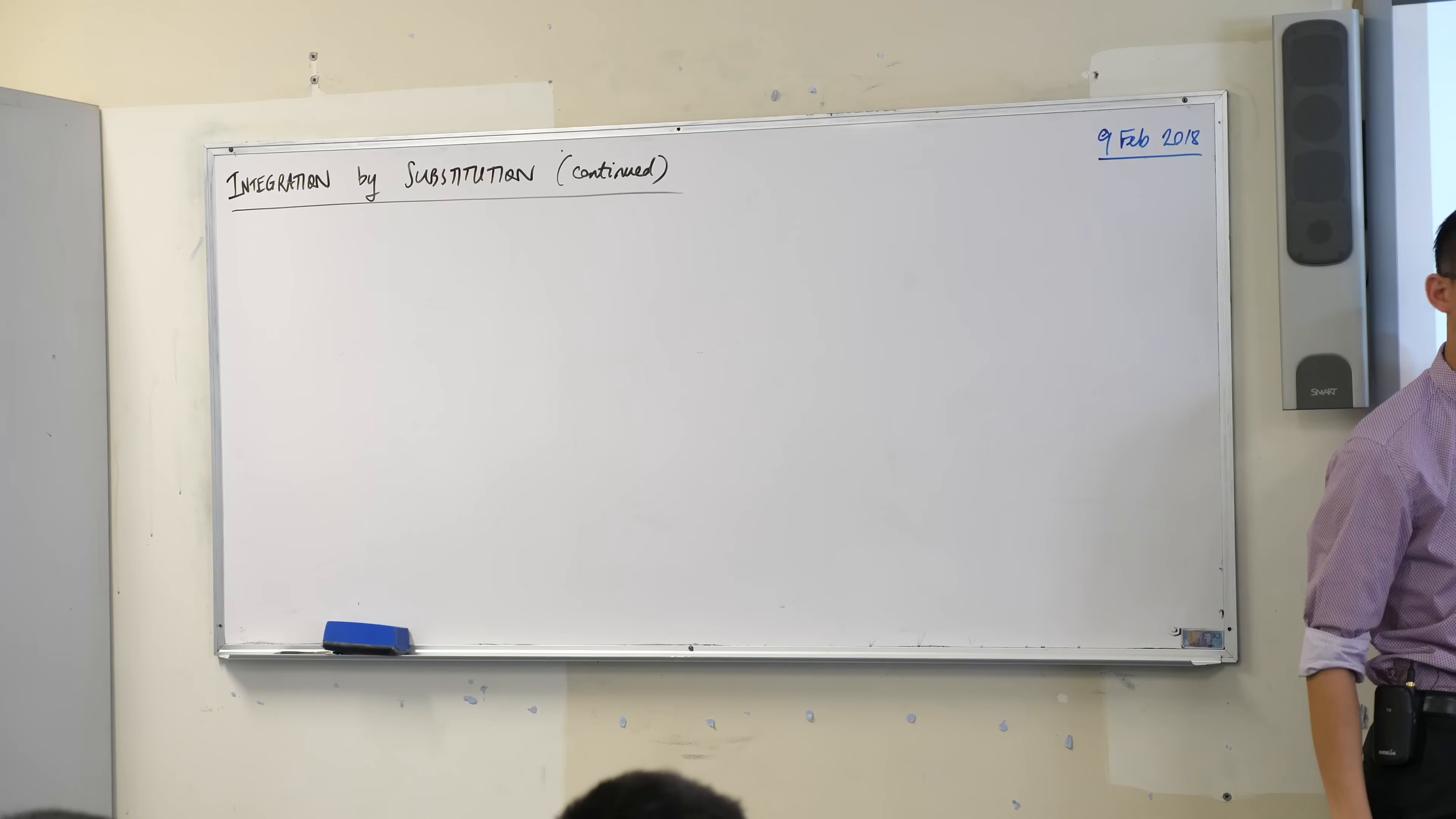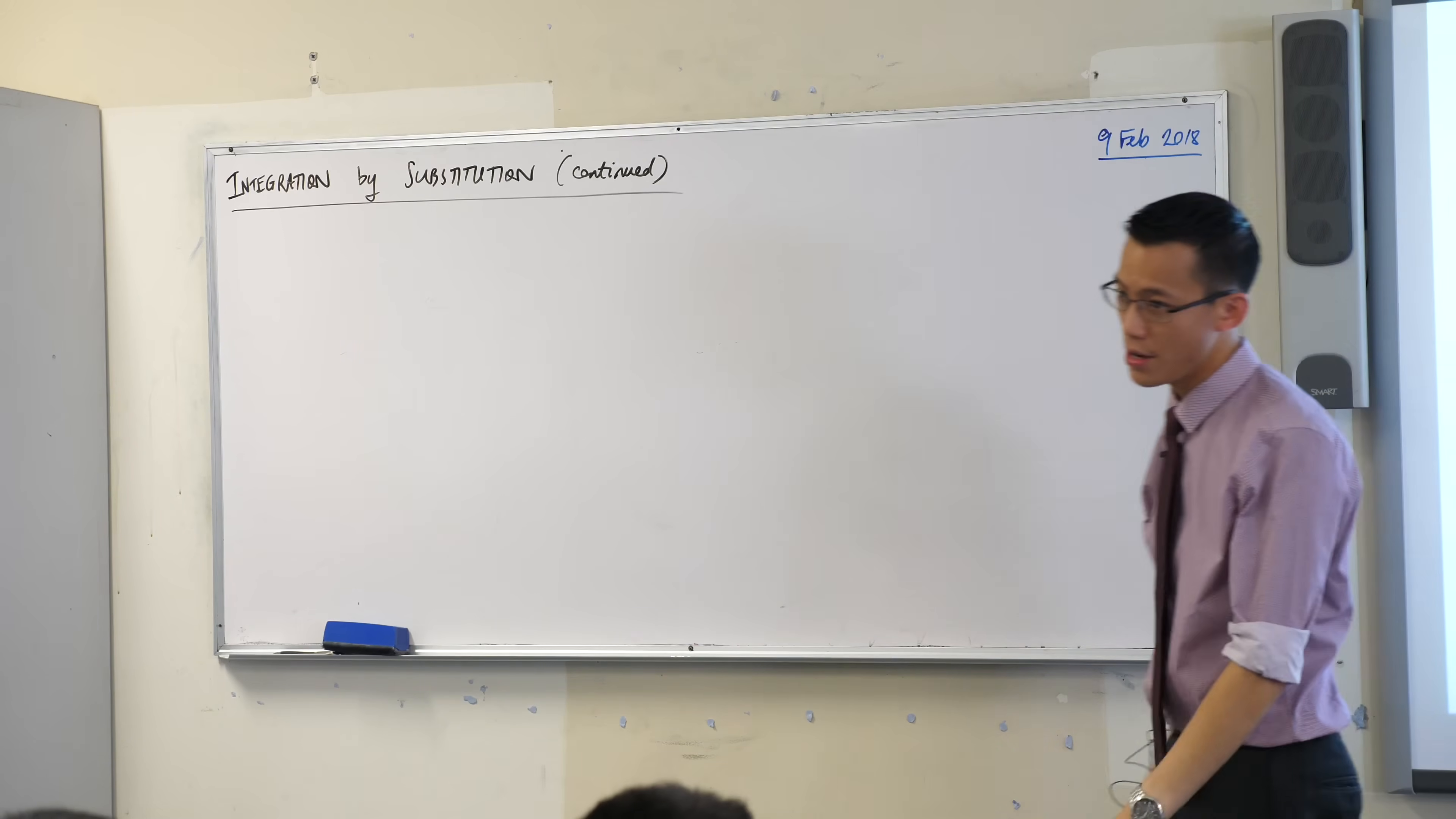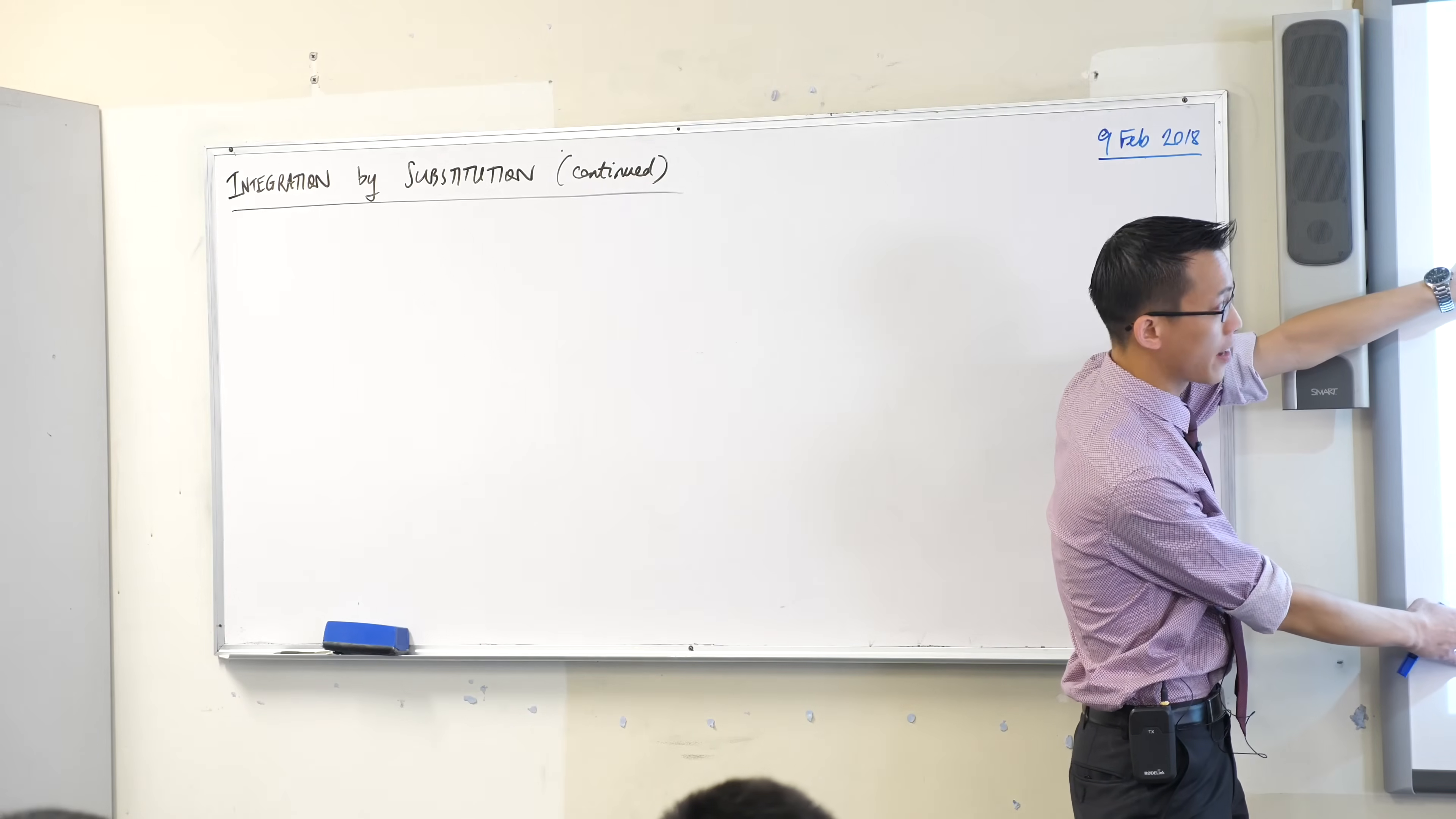But then after that, you should recognize this, right? We've done this this week. The giveaway are those squiggly equals signs. So we can use the trapezoidal rule or Simpson's rule to approximate any integral we like.